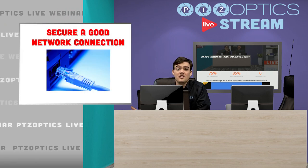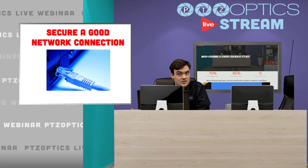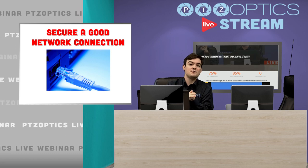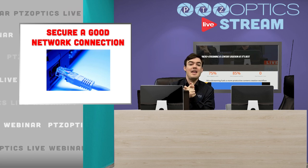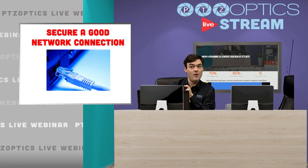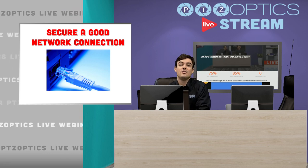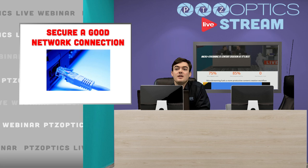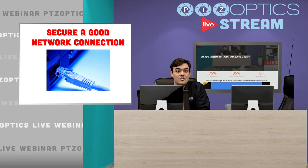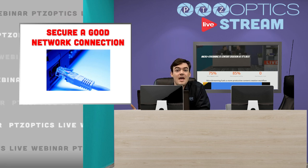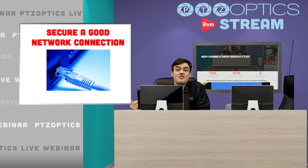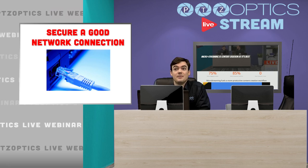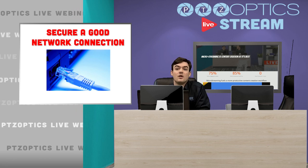One tip is you want to secure a good network connection. When you're live streaming a concert, you're going to a venue — you're not in your broadcast studio. The first question you want to ask is how can I get a network connection to my computer? You don't want to rely on Wi-Fi. Hopefully get a good network connection for your upload for your live stream, and then maybe even do a local recording on your computer if something goes wrong. At least you have your local recording on your computer.